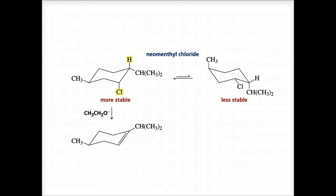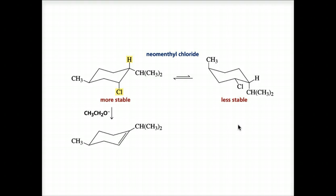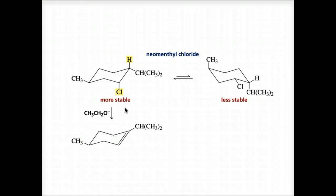Let's continue our discussion of elimination reactions. On this slide, note that since one of the two conformers of neomethyl chloride may not undergo an E2 reaction — the one on the left is undergoing E2 and the one on the right is not — it's because the substituents are not axial on the one on the right. The rate of an elimination reaction is affected by the stability of the conformer that does undergo the reaction, which is the more stable of the two shown here on the left. The reaction is faster if the elimination takes place by way of the more stable conformer.